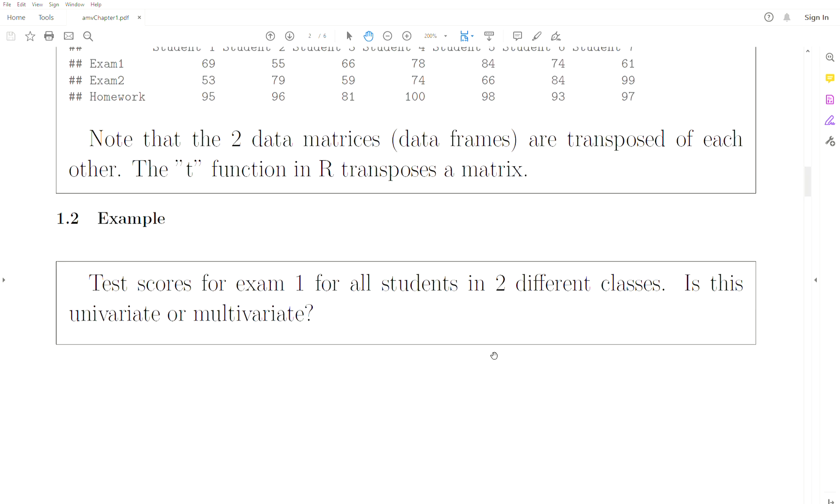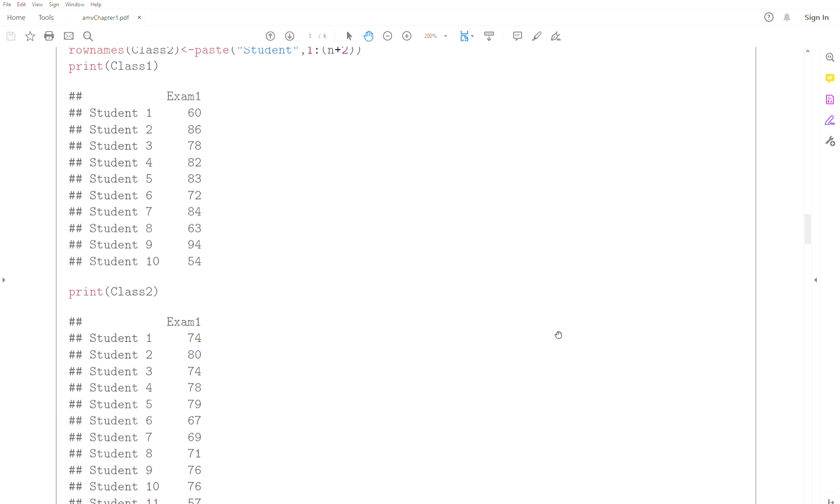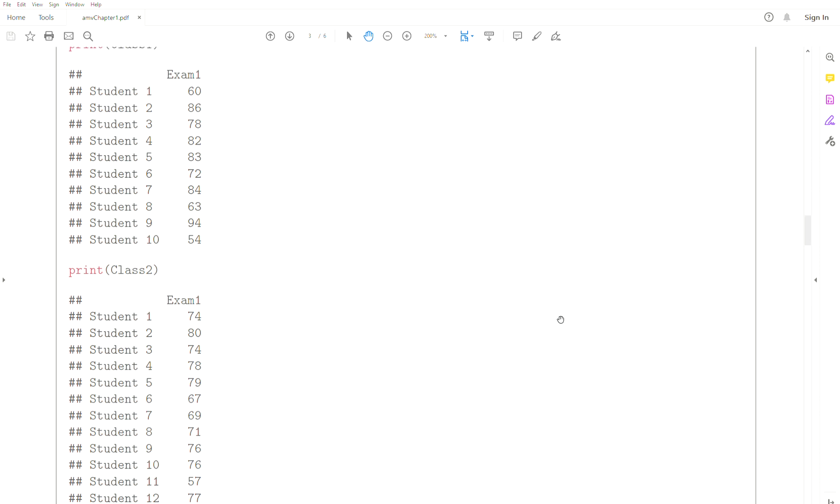So let's look at another example. Let's look at the test scores for exam one for all students in two different classes. And the question is, is this multivariate or univariate? And the answer is it's univariate. We have one response variable per subject.